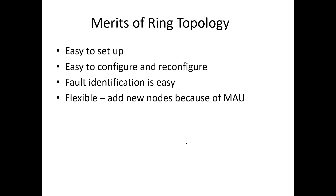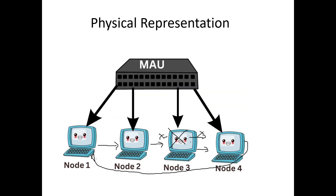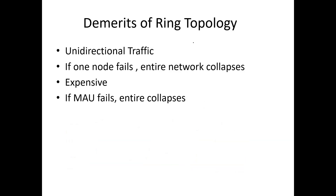Ring topology is flexible — we can add new nodes easily without disrupting the existing nodes or existing topology. If you want to add any additional node, you simply connect a cable from the new node to the multi-station access unit. Because of this multi-station access unit, we can easily add new nodes, which is why ring topology is considered flexible.